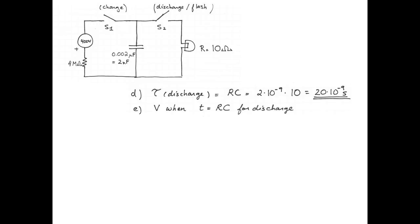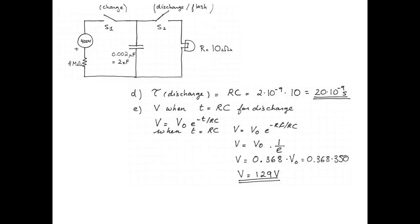When the capacitor is discharging, the voltage across the capacitor is equal to the voltage across the flash bulb because there's nothing else in the circuit. So we're going to look for the voltage across the capacitor when the time is equal to the time constant. The formula for the voltage across a discharging capacitor is the initial voltage multiplied by e to the negative t over RC. When t equals the time constant, we get v equals V₀ times e to the negative RC over RC, which is e to the negative 1, or 1 over e. This makes the voltage across the capacitor after one time constant 0.368 multiplied by the initial voltage. 0.368 times 350 volts is 129 volts.